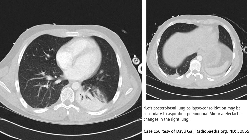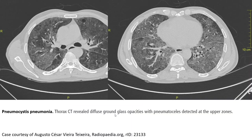Here is the image of CT of the first case. We can find the left posterior basal consolidation, maybe secondary to aspiration. There are also minor atelectatic changes in the peripheral zone. This is the second case where we can find diffuse ground glass opacity with some small nodules detected at the upper zone.